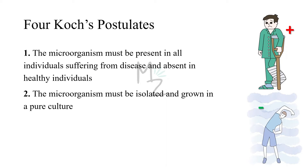Now let's talk about the four Koch's postulates. The first one is that the microorganism must be present in all individuals suffering from the disease and absent in healthy individuals. If we take a blood sample from an infected person, that sample must have the microbe or pathogen responsible for causing the disease. And if we take a sample from a healthy person, that should not have any pathogen in it.